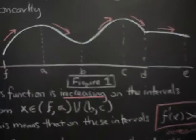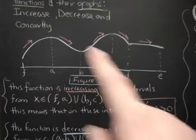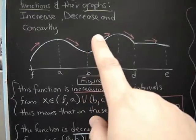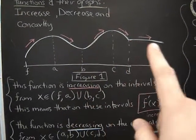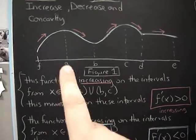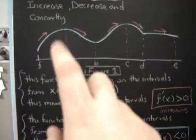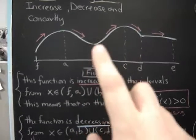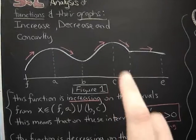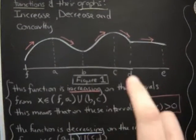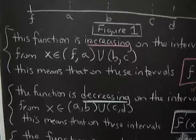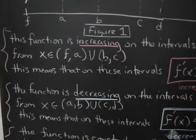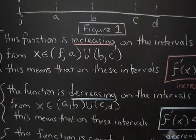Here is a function, a curve, and you can see that the function increases here, and then goes back down, and back up, and back down, and then all of a sudden it's constant. So from f to a, it increases. From a to b, it decreases. From b to c, it increases again. Decreases from c to d, and then it's constant on the interval from d to e. The function is increasing on the intervals x is an element from f to a, union b to c.